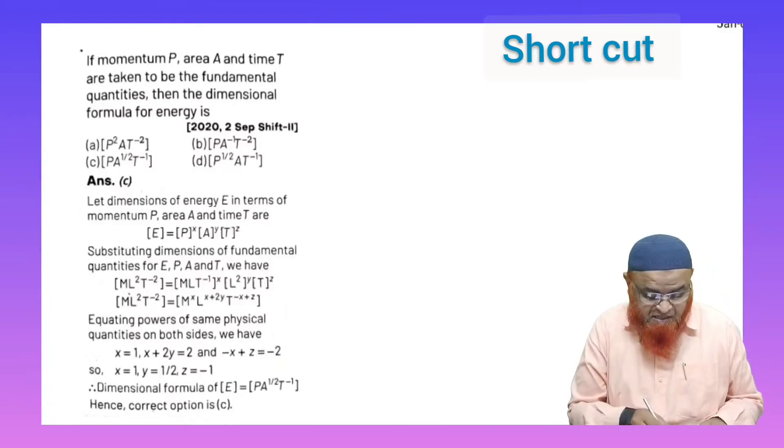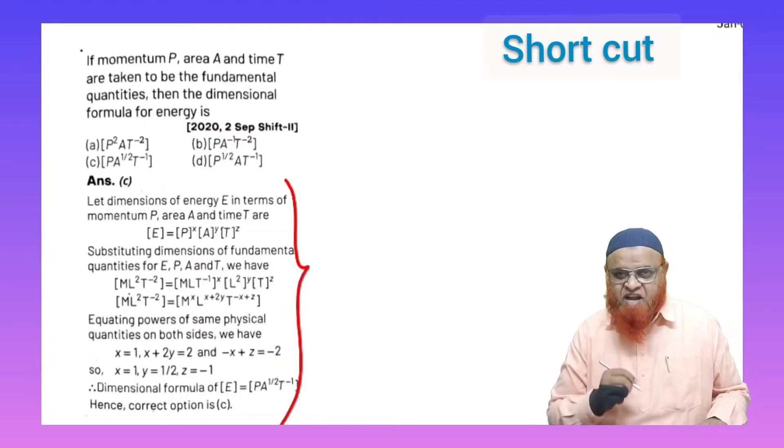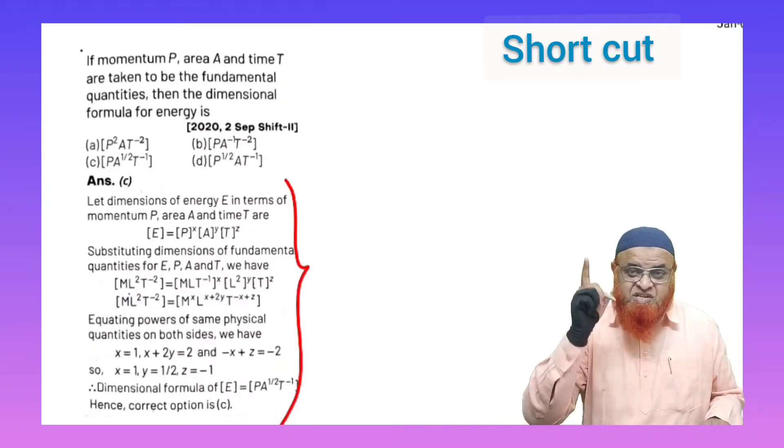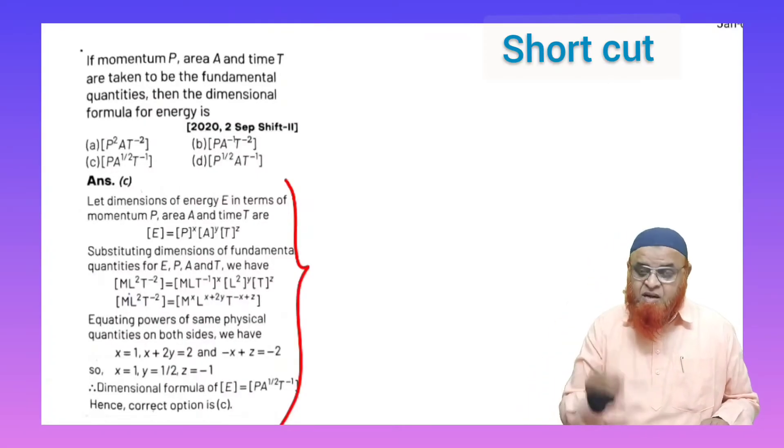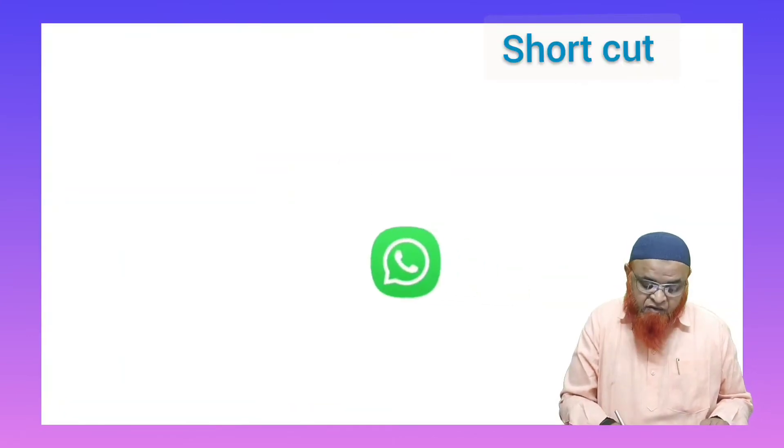See, here it is asking us to find out the energy. This is a very lengthy process; it takes a lot of time and there is a possibility that mistakes may occur. But let us go for a simple, easy method. For example, you can write here E equals half mv square. Half does not have any dimensions.